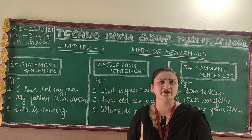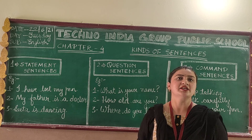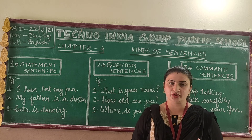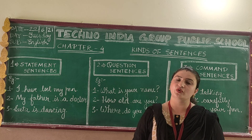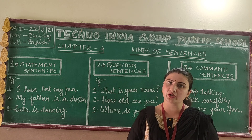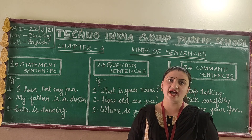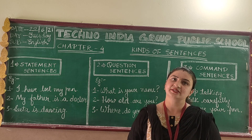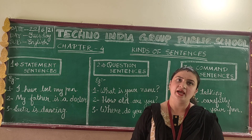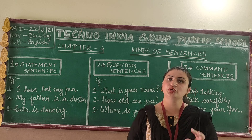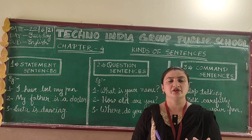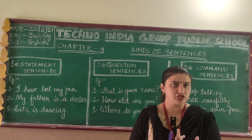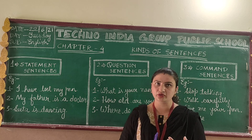In our previous classes we have studied sentence and parts of sentence. What is a sentence? A group of words which have a perfect meaning is called a sentence. And there are two parts of a sentence: first is subject and second is predicate.